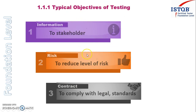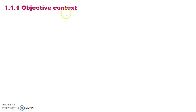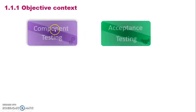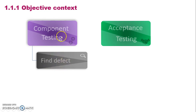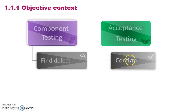Although those objectives are general for all testing, they are also context dependent — meaning the objectives will change depending on the type of testing being done. For example, in component testing your objective is to find as many defects as possible because it is an initial stage of testing and cost-effective to do so. Whereas in acceptance testing, which is almost the last level, the objective is not primarily to find defects but to confirm that all the requirements given by the customer are fulfilled.